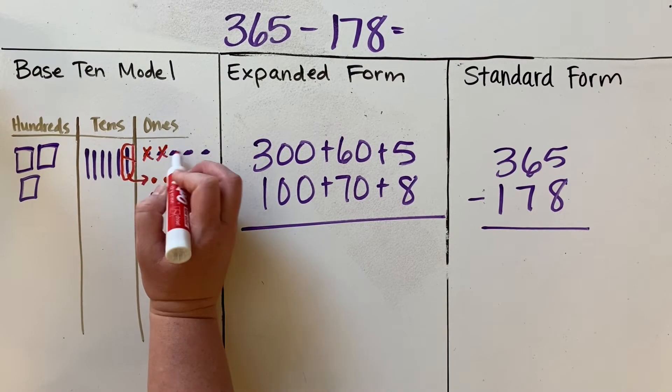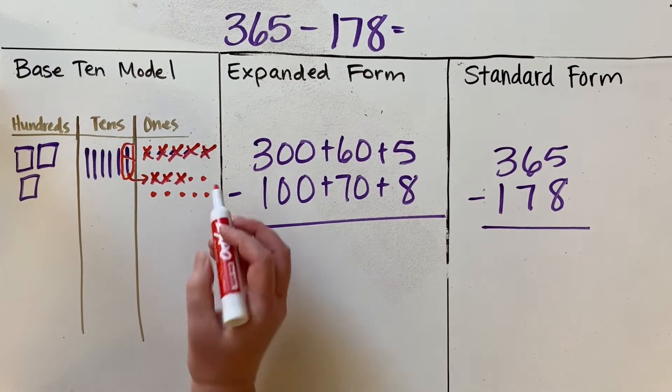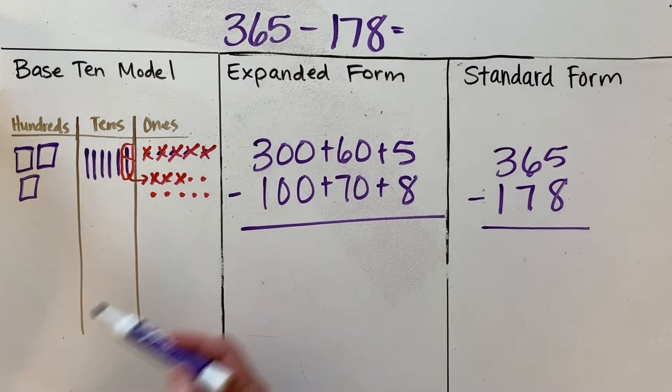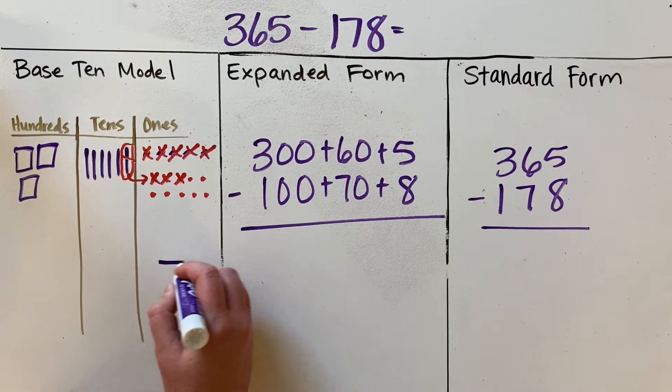And then we are able to subtract those eight ones away: one, two, three, four, five, six, seven, eight. Now we look to see how many ones are still left—one, two, three, four, five, six, seven—seven ones.